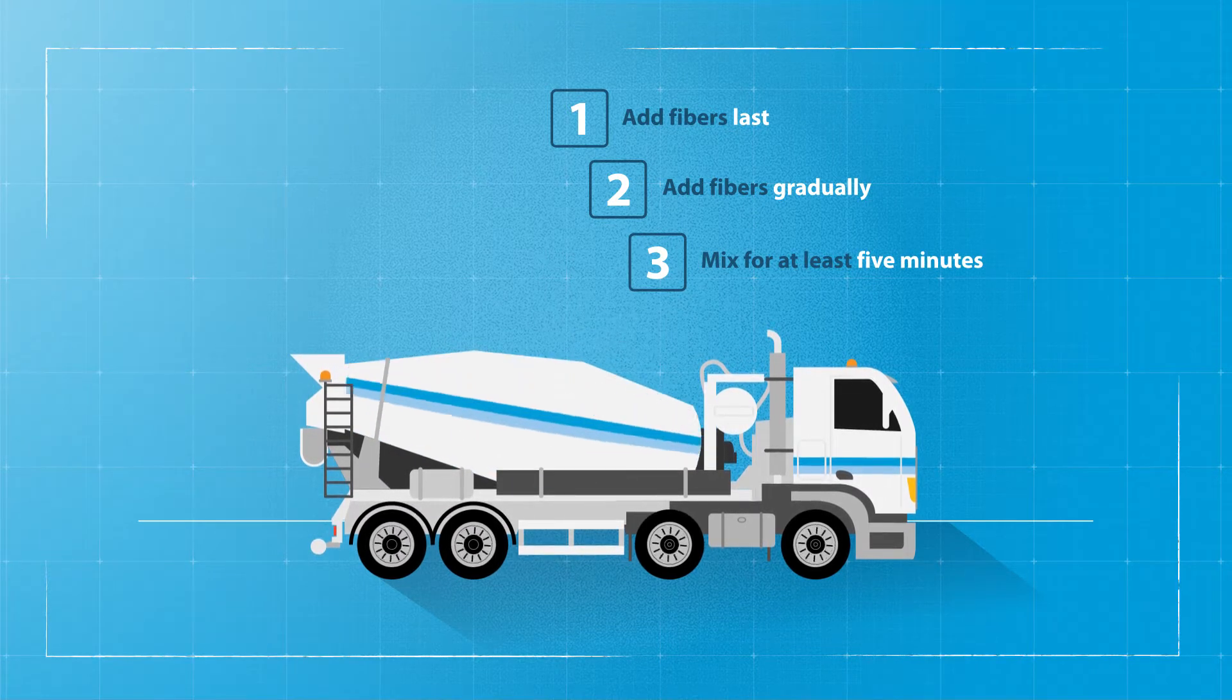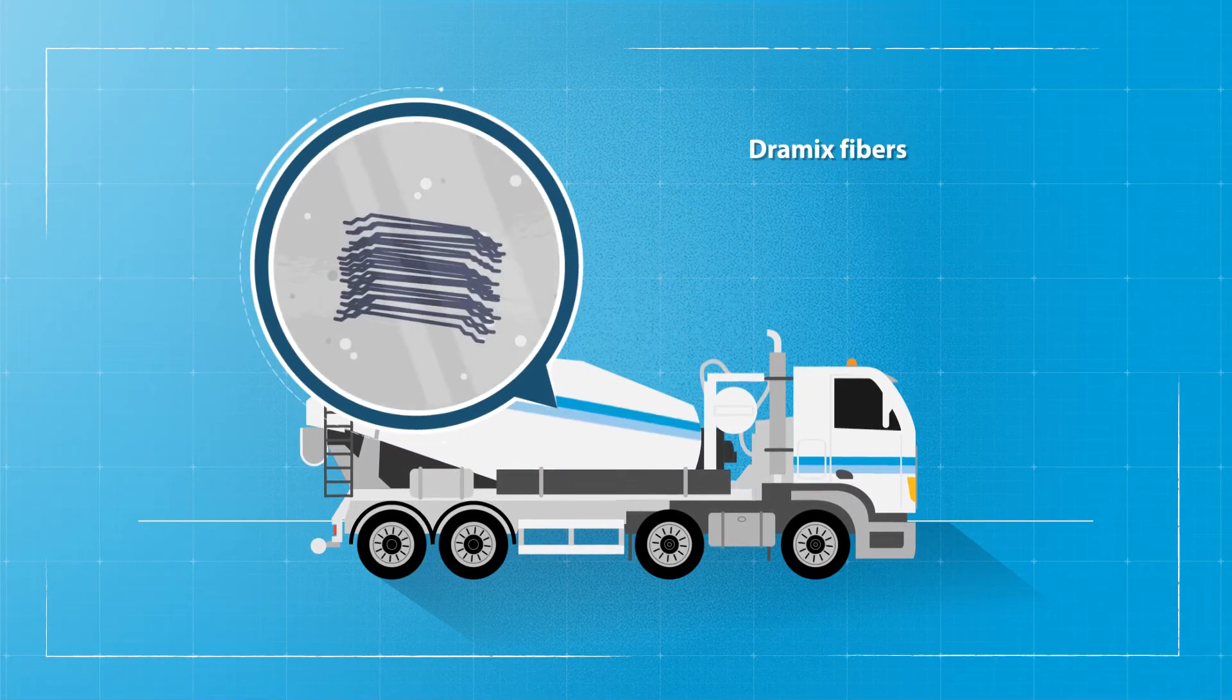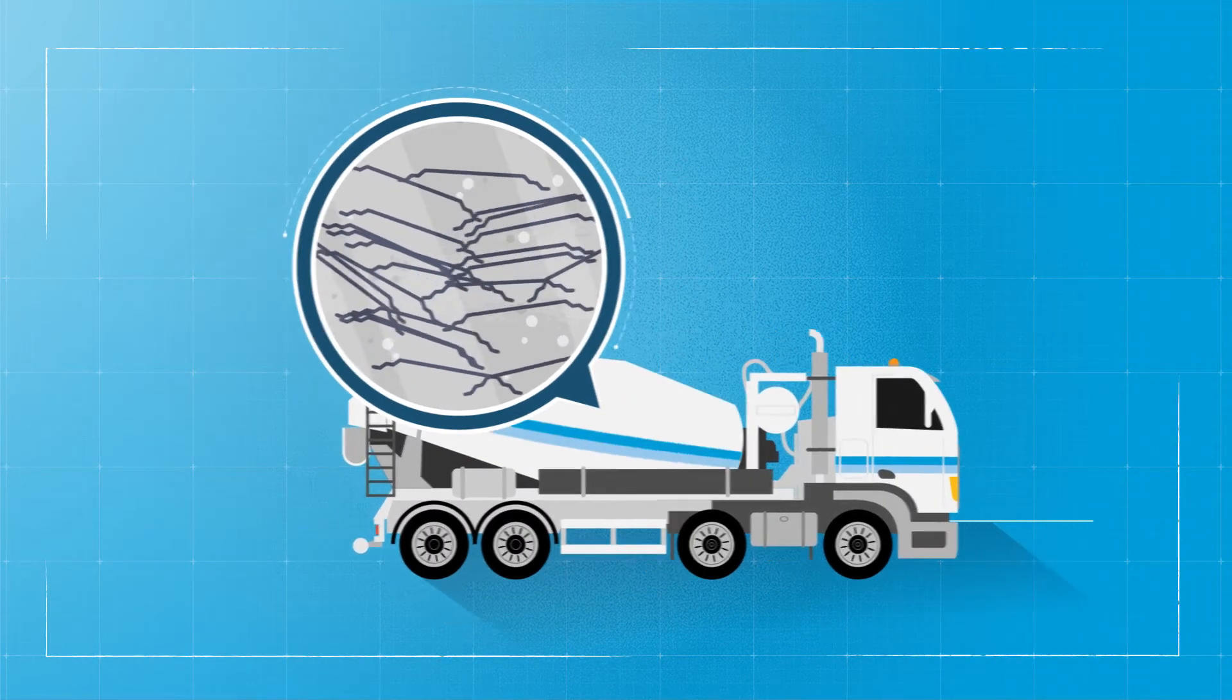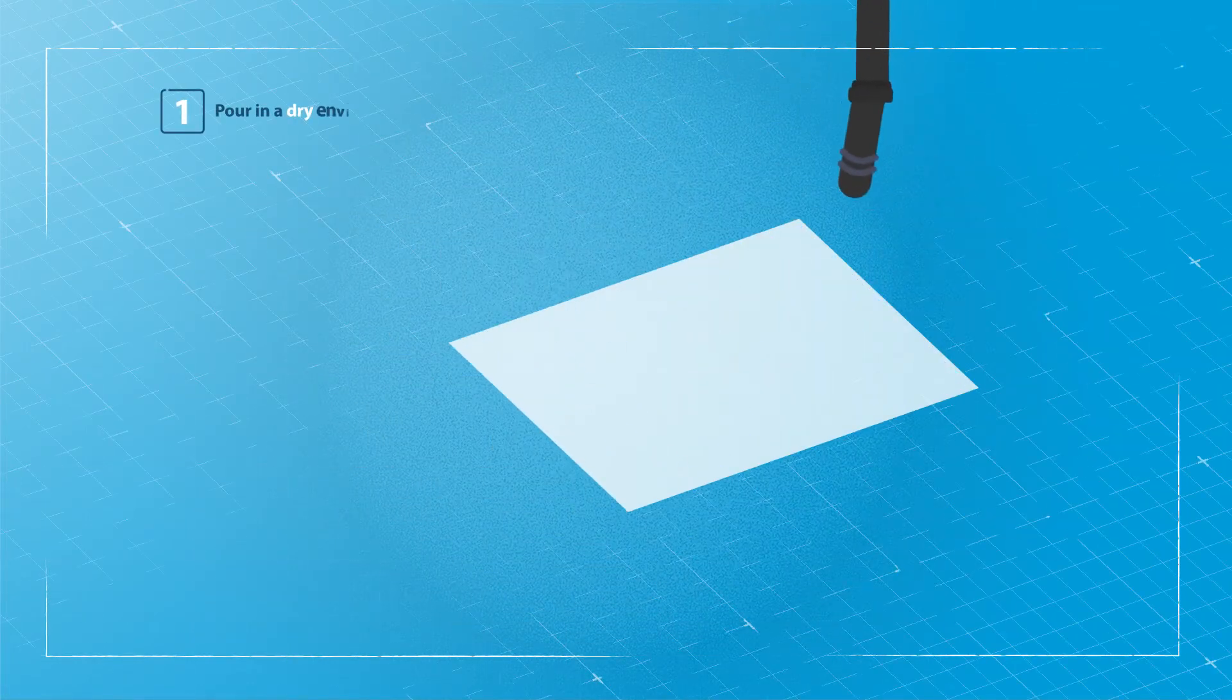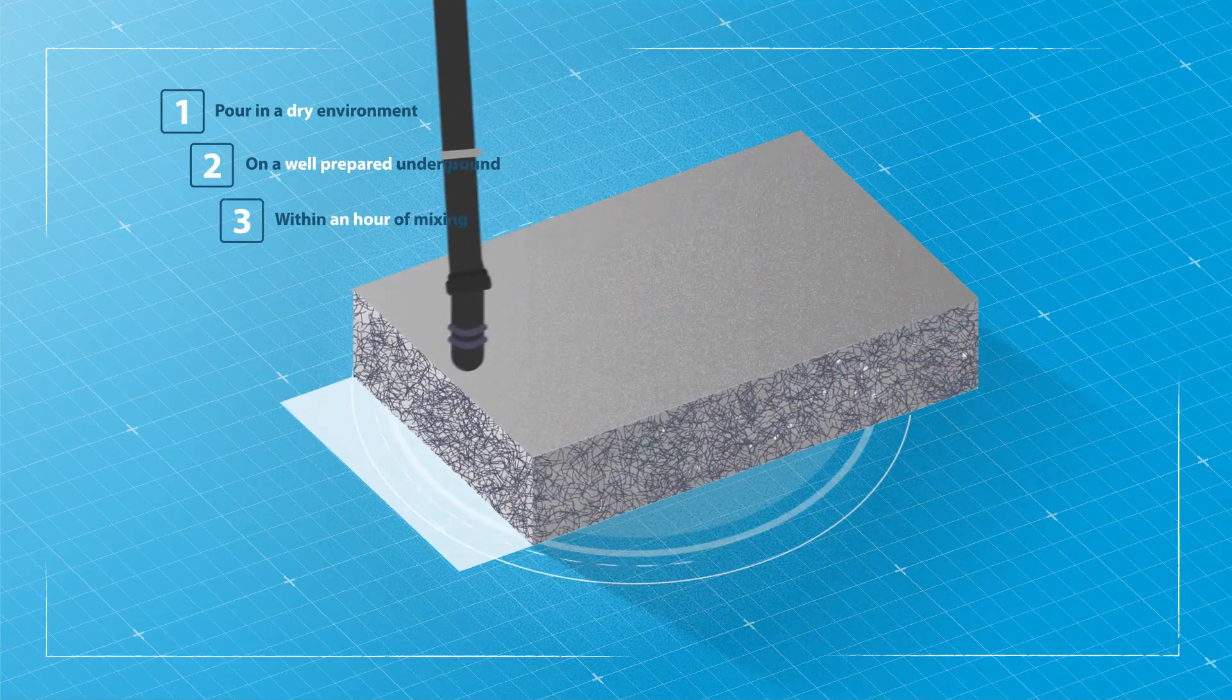You can pour the concrete either directly or by pump. The fibers are glued in bundles that gradually release during mixing, dispersing evenly through the concrete without balling. Just make sure you pour in a dry environment, on a well-prepared underground, and within an hour of mixing.